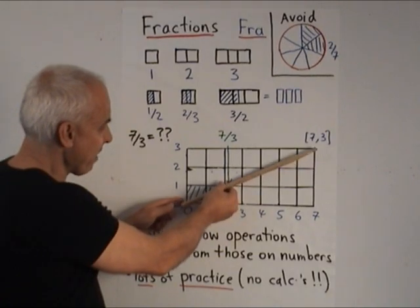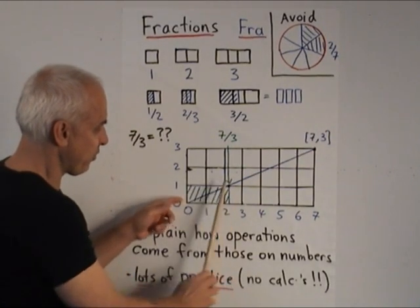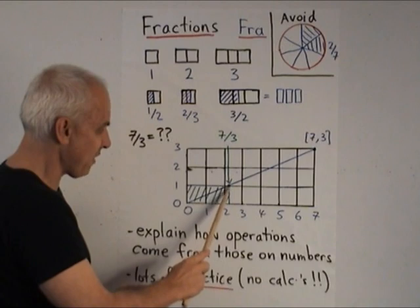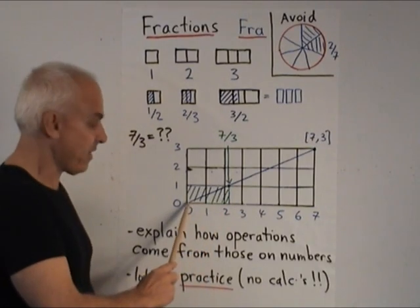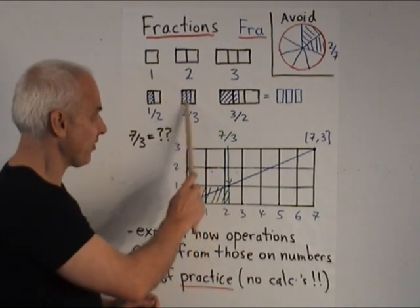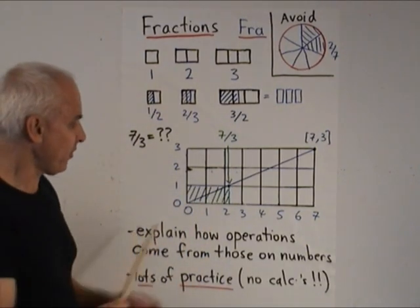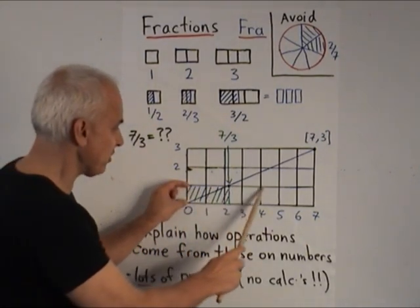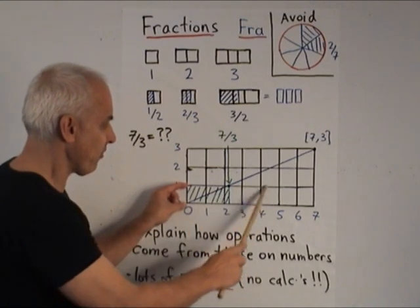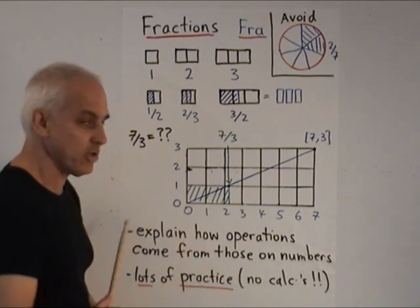Our line representing seven thirds intersects that strip right at this point here. And if we allow that to cut off a little rectangle, then that is the rectangle that in this context corresponds to 7 over 3. So in this way fractions correspond to parts of this strip, which is one unit high.